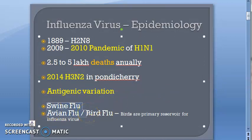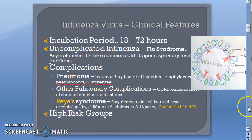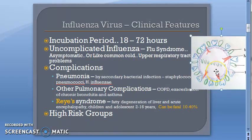Influenza also affects pigs and birds, which are the primary reservoir of the influenza virus. That is why whenever there is an outbreak of swine flu or avian flu, they cull these animals. Clinical features of influenza virus: it can be asymptomatic or cause a common cold-like situation, however the fever can get worse over time and there can be complications like pneumonia and other upper respiratory tract complications like COPD.